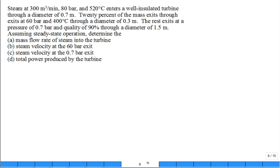Let's solve a problem. We have steam at 300 meters cubed per minute. What is that information given? 300 meter cubed per minute. That's a volumetric flow rate, right? So a lot of times you just start organizing information. AV1 is going to be 300 meters cubed per minute and a pressure P1 of 80 bar and a temperature T1 of 520 degrees C enters a well insulated turbine.